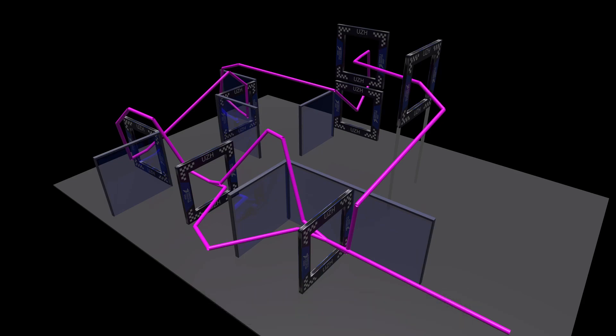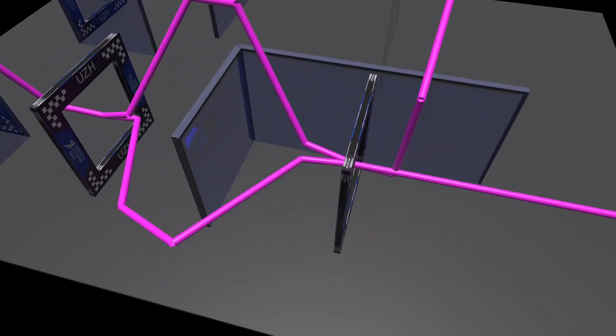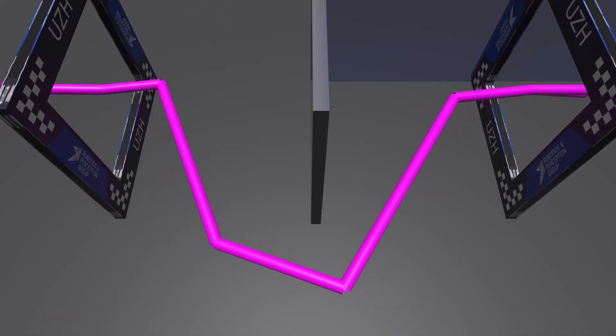These paths are then used subsequently to guide the reinforcement learning algorithm. The goal of the reinforcement learning policy is to maximize the progress of the quadrotor along the previously calculated guiding path.